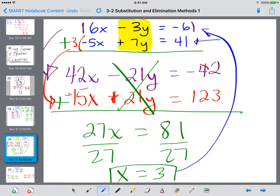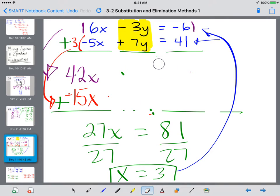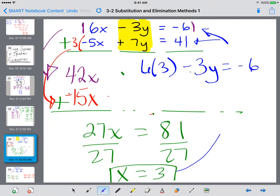Let's plug it into the top. So I'm going to clear some space. And I'm going to plug in 6 times 3 minus 3y equals negative 6. So I plugged it into the top equation here. I plugged 3 in for x.